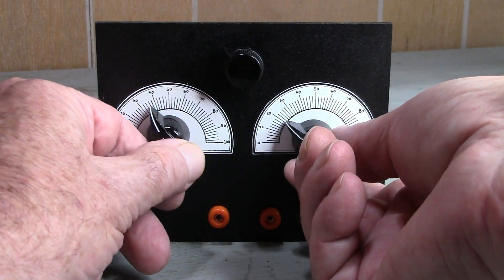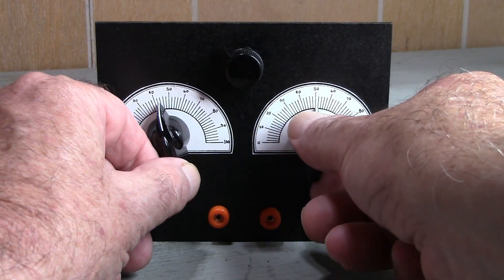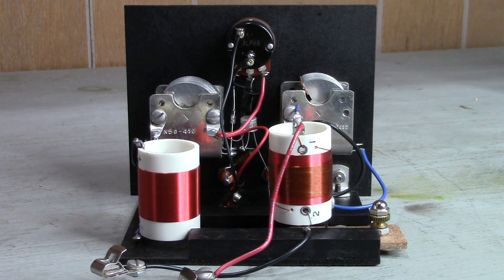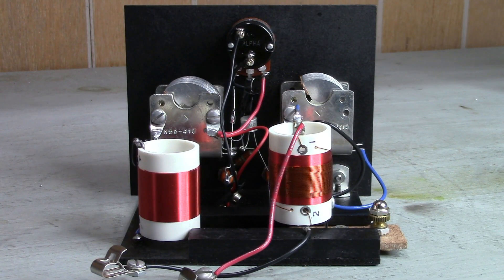The set employs two tuned circuits, so you actually need two hands to tune in a station. Selectivity of the set is adjustable by changing the distance between the coils of the two tuned circuits.